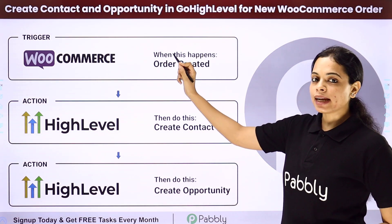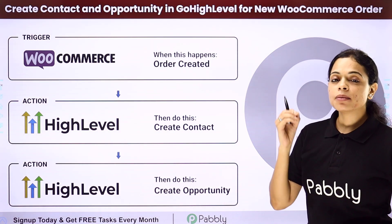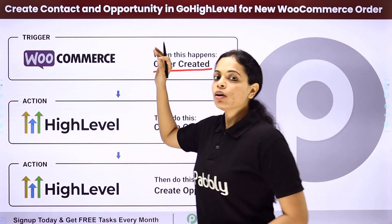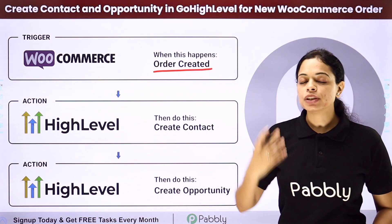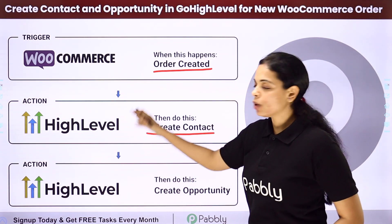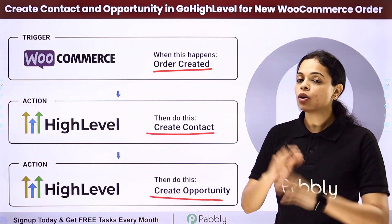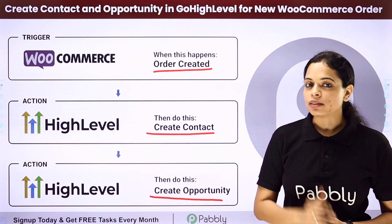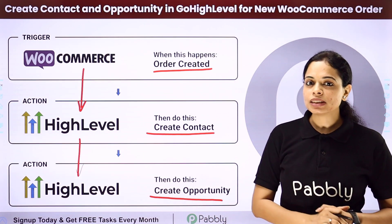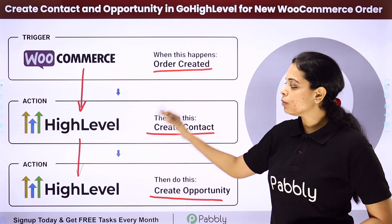In this video, we are going to understand how to create a contact and opportunity in Go High Level for a new WooCommerce order. Every time an order is created in WooCommerce, automatically a contact should be created in Go High Level and then an opportunity should also be created in Go High Level, which is an all-in-one marketing platform. For this, we'll have to integrate WooCommerce with Go High Level using Pably Connect. Our trigger will be WooCommerce and our action will be Go High Level.